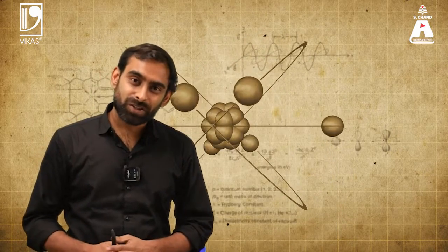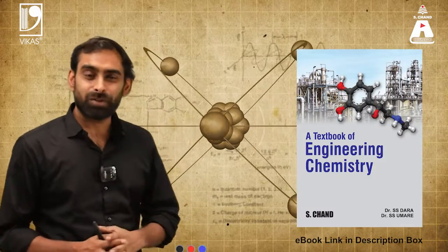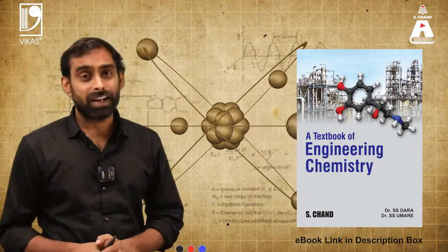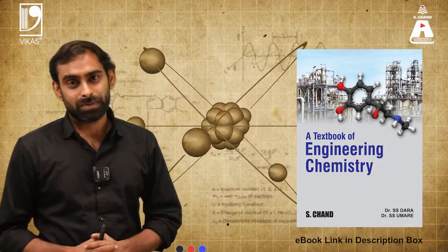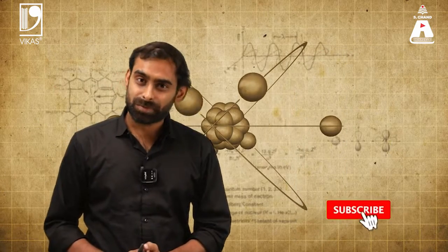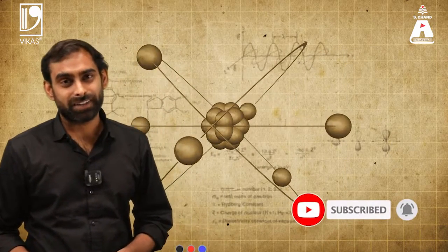But what is the exact theory? What is linear combination of atomic orbitals? What is their shape? We are going to talk about that in the second part of this video. If you want to learn more about this topic, you can refer to this book from S.Chan Publishing. You can find a link for the ebook in the description box below. You can like, share, and subscribe to the channel for continuous use and regular updates.